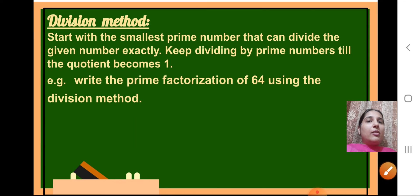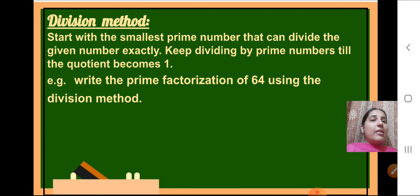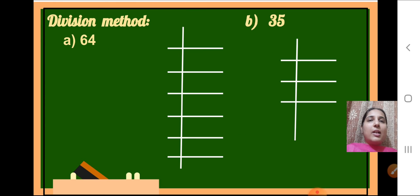That was the factor tree method to get the prime factors of a given number. Now we will see the second method — the division method. In the division method, we start with the smallest prime number that can divide the given number exactly, and keep dividing by prime numbers until the quotient becomes 1. Let's write the prime factorization of 64 using the division method.